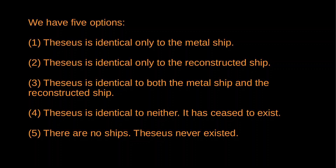A third option is to say Theseus is identical to both the metal ship and the reconstructed ship. But the problem is that if Theseus is identical to the metal ship and identical to the reconstructed ship, it follows that the metal ship must be identical to the reconstructed ship — if X is the same thing as Y and Y is the same thing as Z, then X must be the same as Z. But clearly the metal ship and the reconstructed ship are not identical — they are in different locations with different material parts. So Theseus cannot be one and the same thing as both.